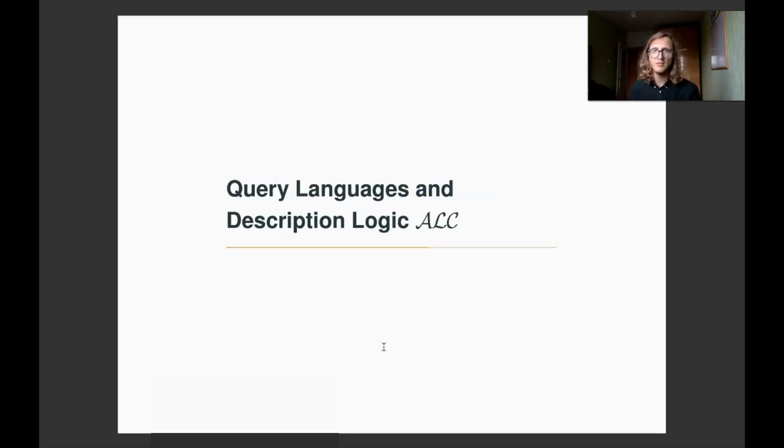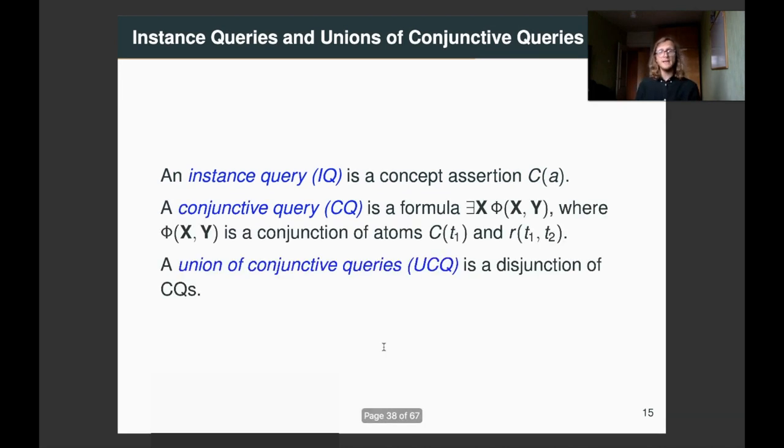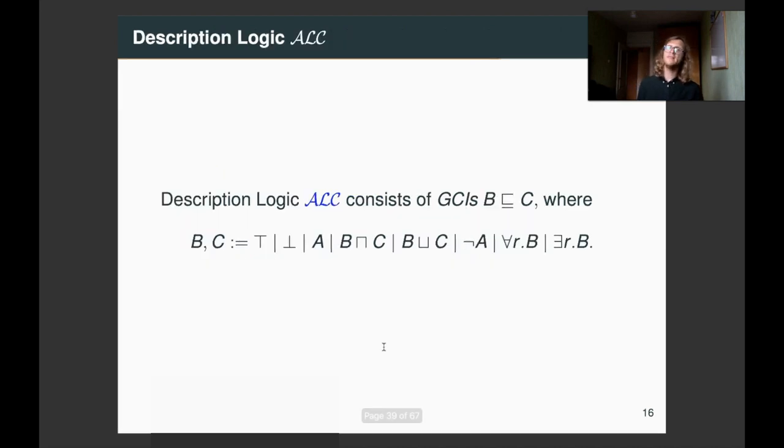So, now we just give a brief overview of query languages and introduce the description logic that we will use in some of the proof illustrations. So, we consider two query languages, instance queries, which is simply a concept assertion, and unions of conjunctive queries, which is a disjunction of CQs, which is a conjunction of atoms, where some of the variables are existentially quantified. And the description logic ALC allows concept to be constructed by using top-bottom concepts, also conjunction, disjunction, negation, universal quantification, and existential quantification.